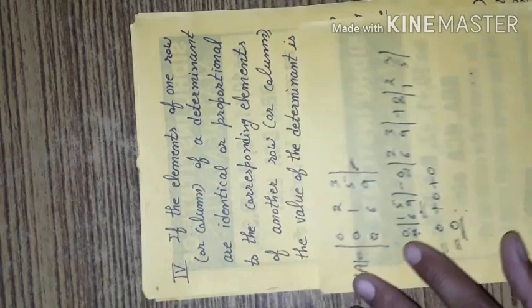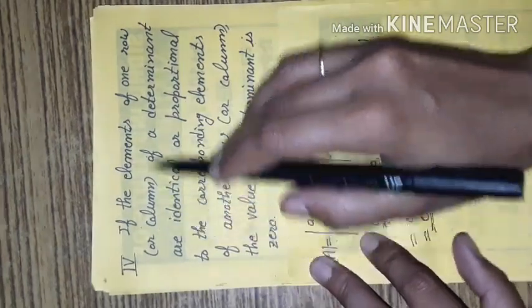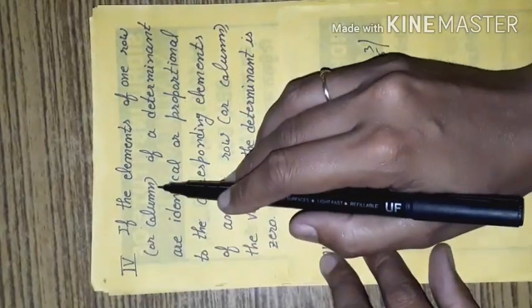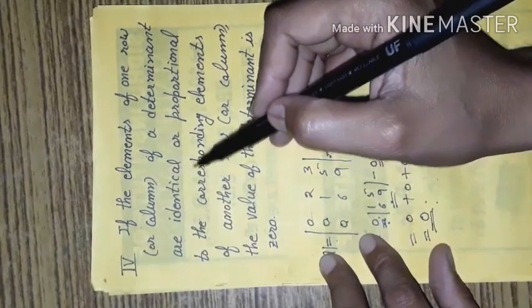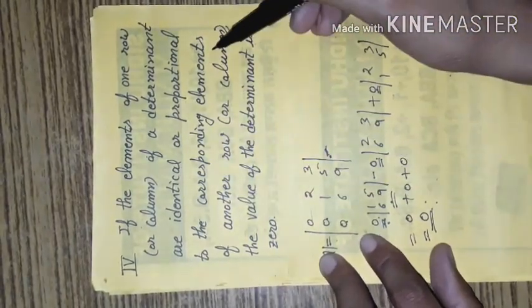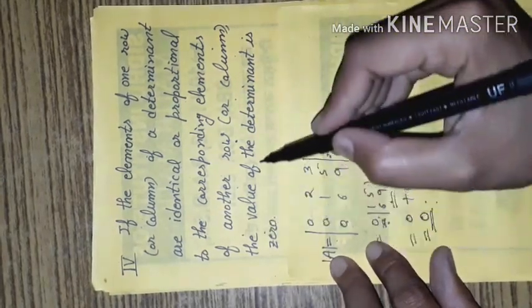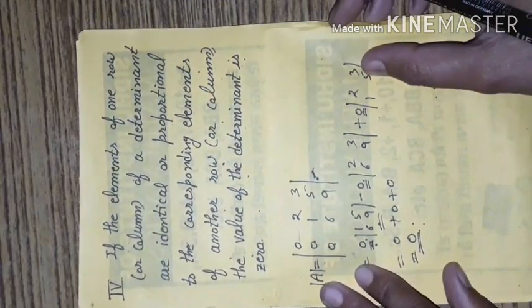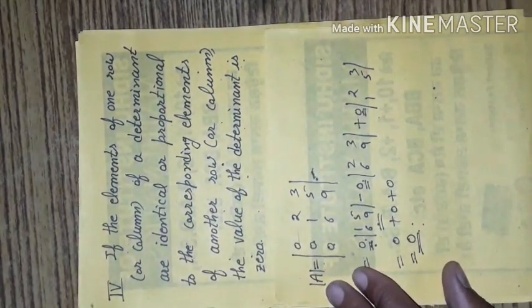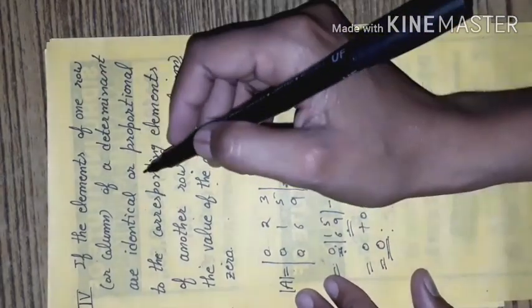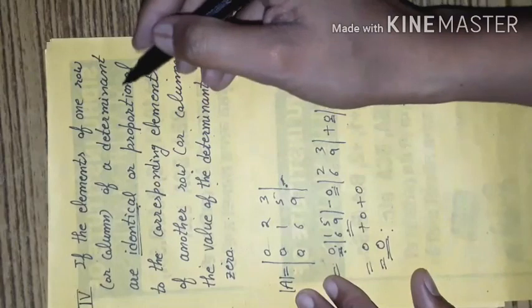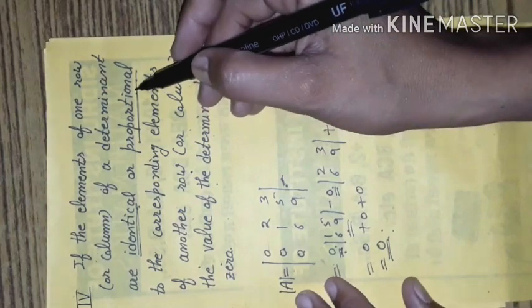The fourth property: if the elements of one row or column of a determinant are identical or proportional to the corresponding elements of another row or column, the value of the determinant is zero. Identical means the values are the same; proportional means one row is a constant multiple of another. If two rows or columns are equal, the determinant is always zero.